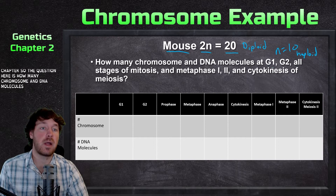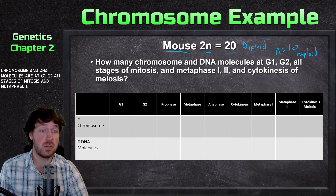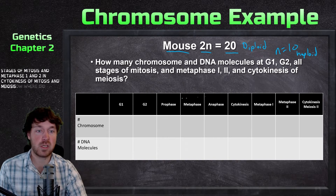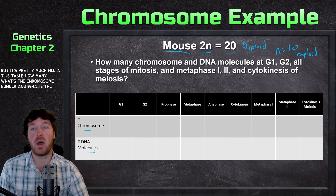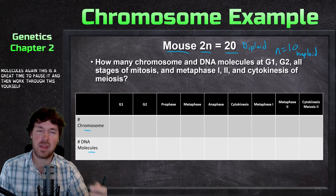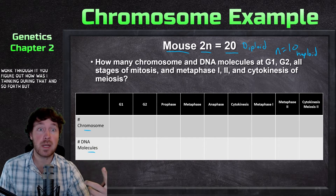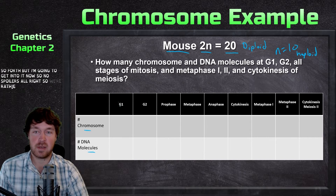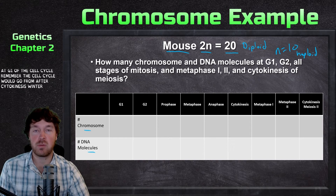The question is: how many chromosomes and DNA molecules are at G1, G2, all stages of mitosis, and metaphase 1, 2, and cytokinesis of meiosis? It's pretty much fill in the table — what's the chromosome number and what are the DNA molecules. This is a great time to pause and work through it yourself. So no spoilers — we're at G1 of the cell cycle.